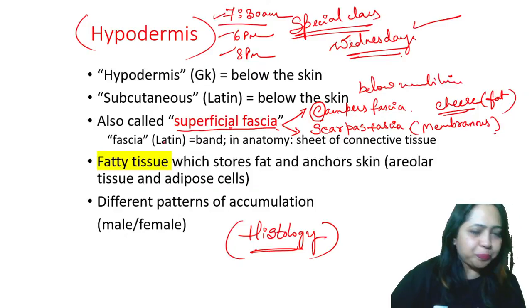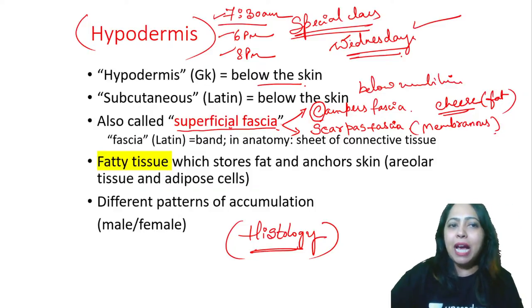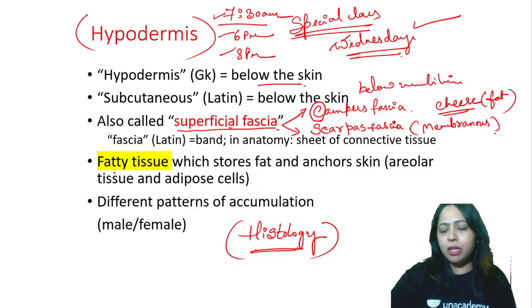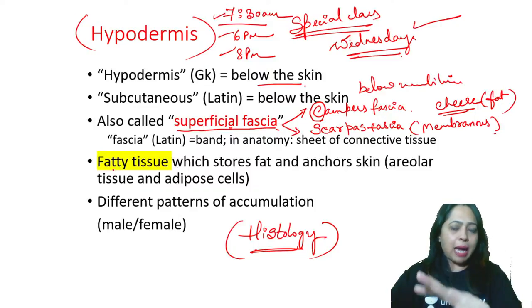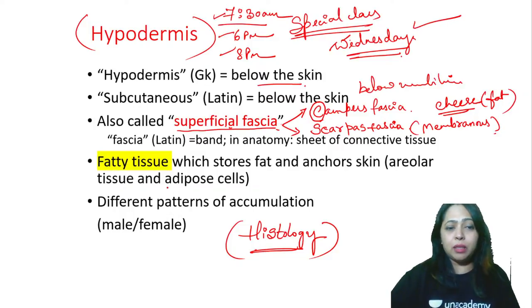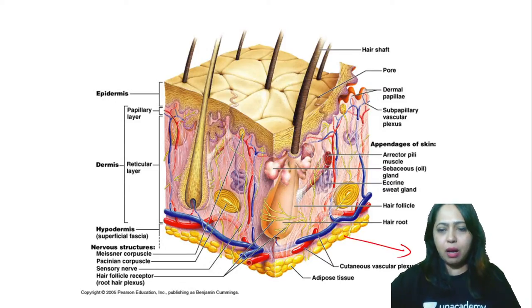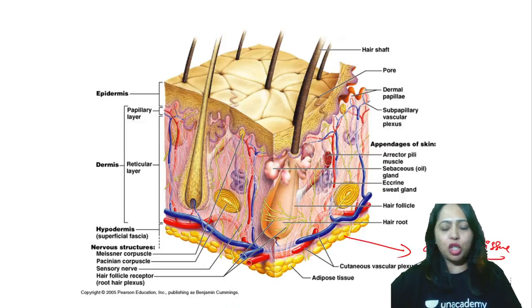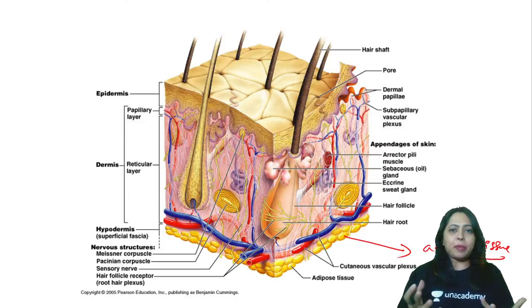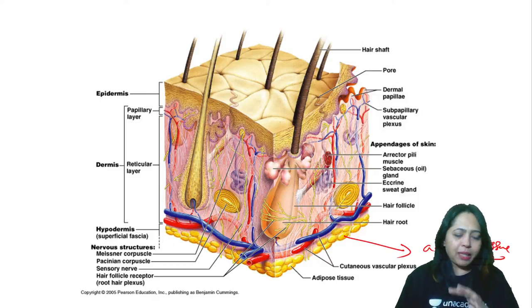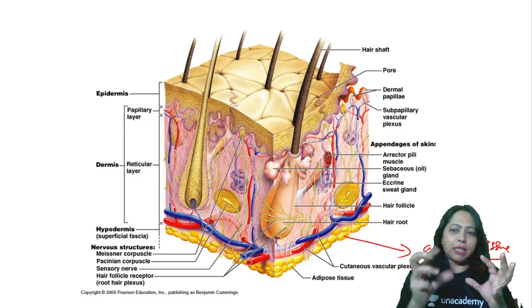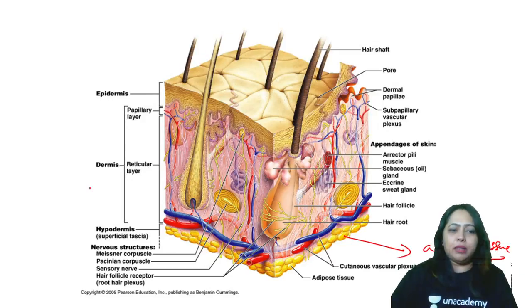The hypodermis is below the skin — also called superficial fascia. The two divisions are camper's and scarpa's. It is filled with fatty tissue called adipocytes. Looking at adipocytes, all those yellow ones are the adipose tissue. These cells are embedded in areolar connective tissue. There are also nerve structures — we have Meissner's corpuscles and Pacinian corpuscles, which look like a disc. Pacinian is for pain — P is for pain.